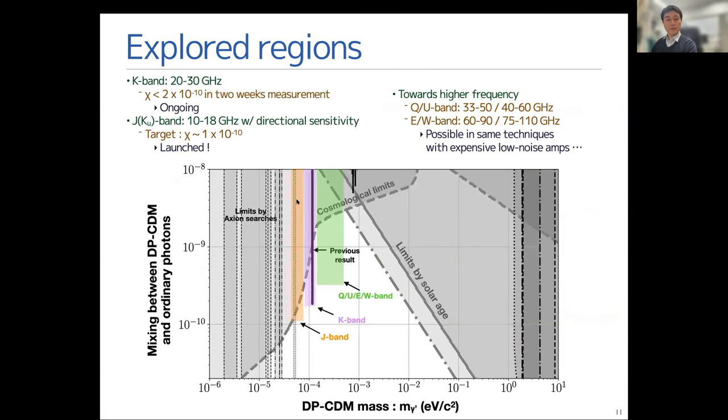Finally, I'll show the explored regions. The first run is going for this band and J band experiment is planned to search for this region. For the higher frequency region, we plan to do the Q or U band, E or W band experiment, to explore these regions.